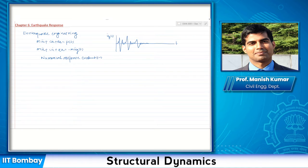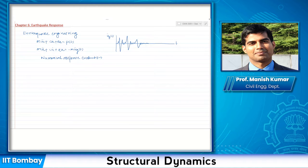To evaluate the response to arbitrary ground excitation, we can only rely on numerical response evaluation, as we did in the previous chapter. Even if the excitation is arbitrary, we are still able to find the response. We will then see how to incorporate the concept of response spectra into the analysis of structures subject to earthquake ground shaking.